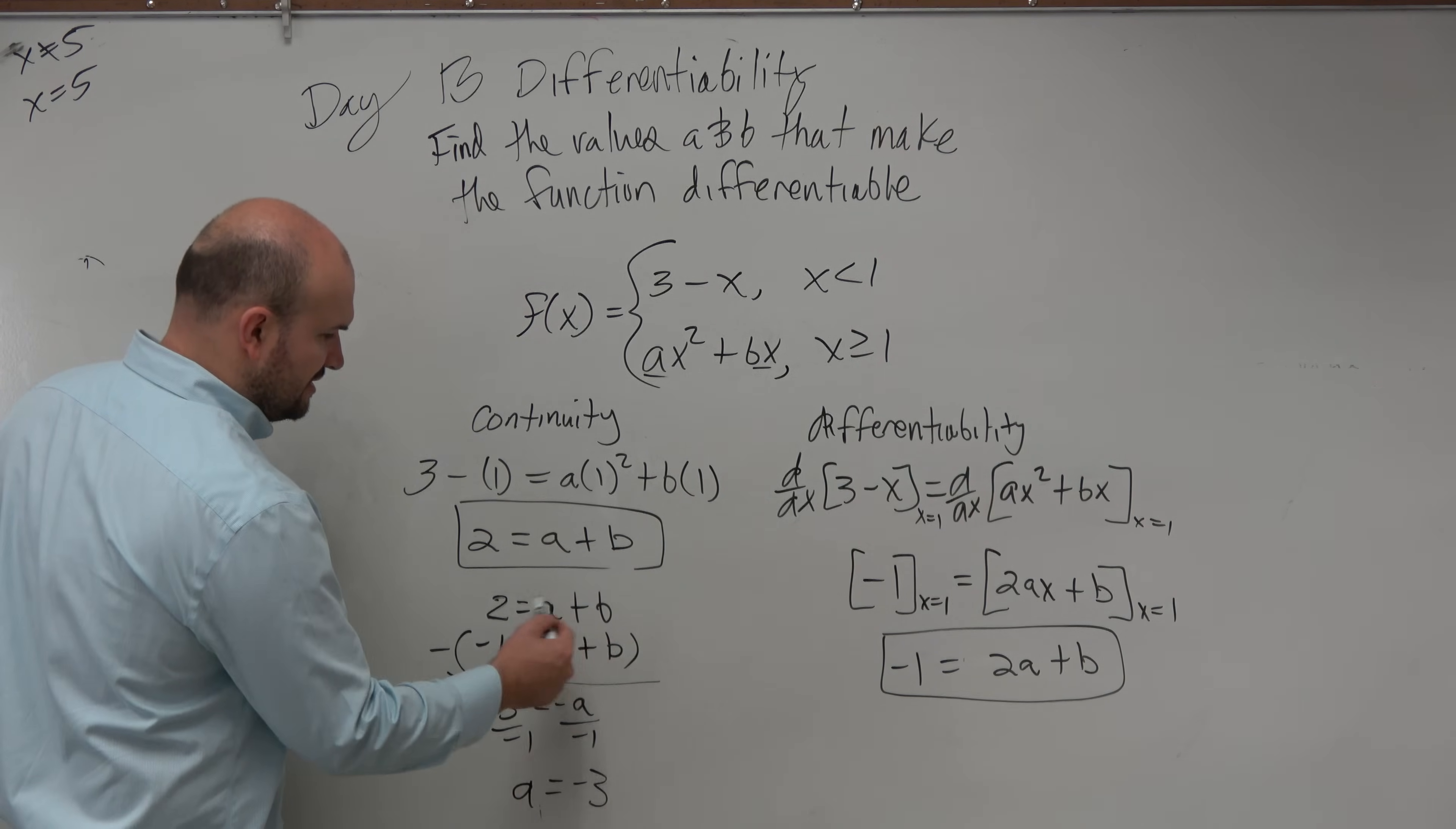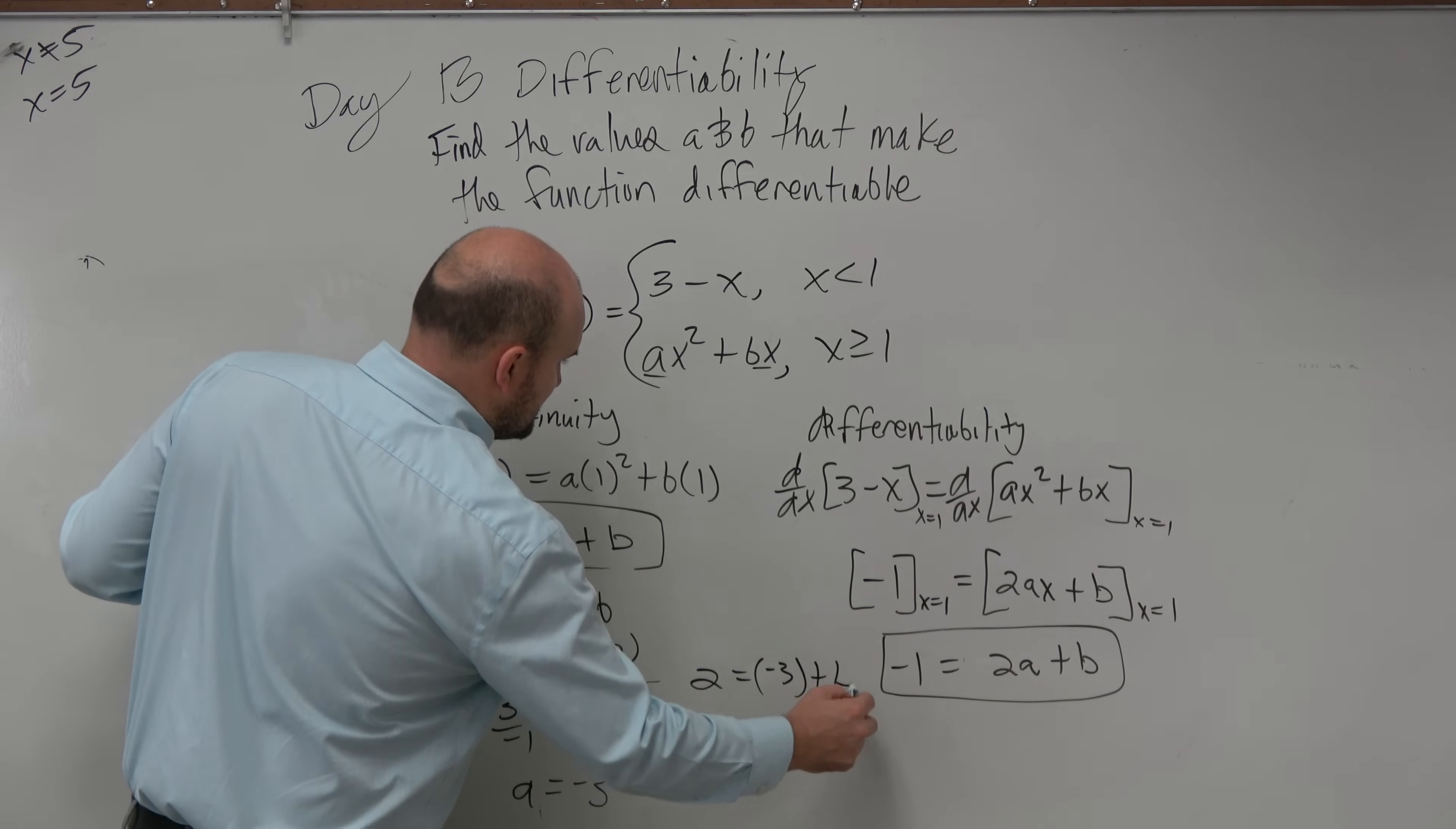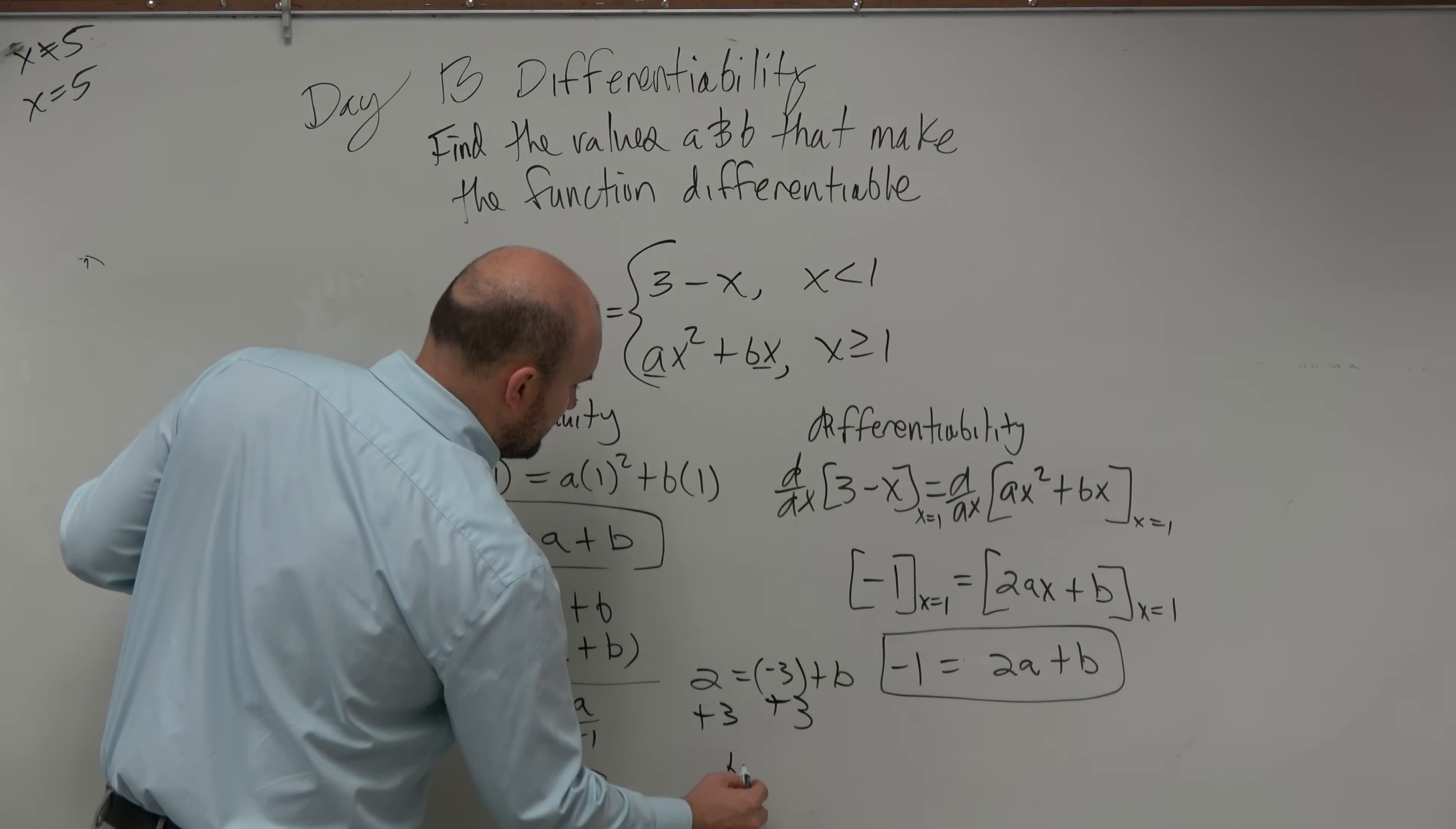Now, I know what a is. Let's find b. So, I do 2 equals negative 3 plus b. Add 3. Add 3. b equals 5.